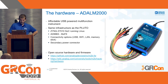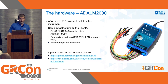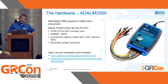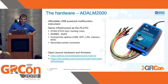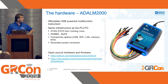The hardware is the M2K, which is an affordable USB-powered multifunction instrument. It's not the Pluto, but it's based on the same infrastructure. It has a Zynq Z7010 SoC running Linux, but with a different analog front end — the AD9963 chip. The connectivity options are the same as the Pluto: USB, Wi-Fi dongle, LAN dongle, or even a memory stick. It's all open source hardware and software — you can check out the source code and schematics at the provided links.